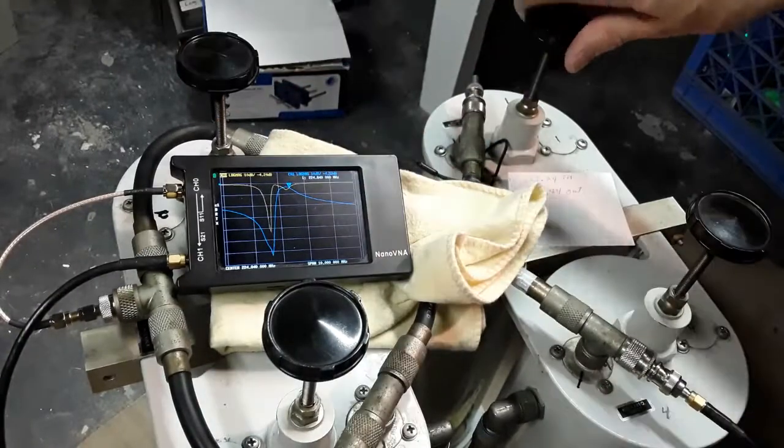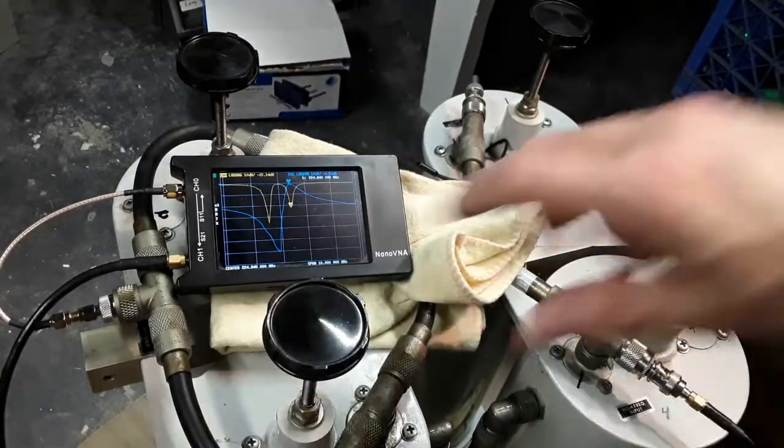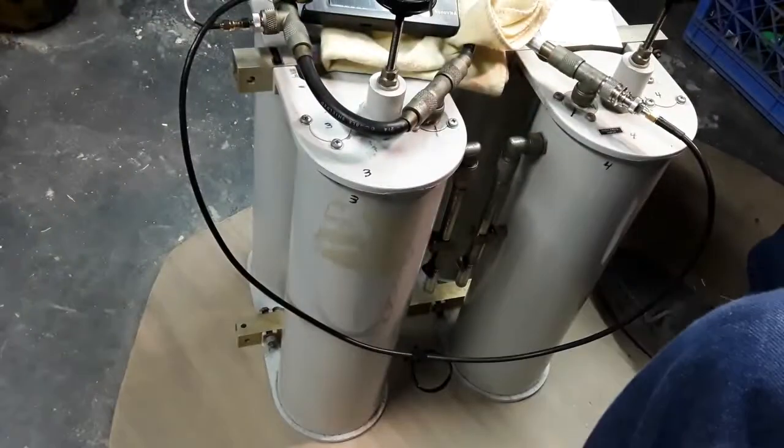Then adjust the receive side screws while observing the SWR trace. Now back to the transmitter side bandpass screws again.